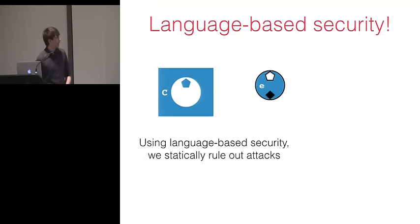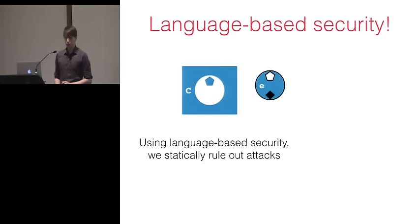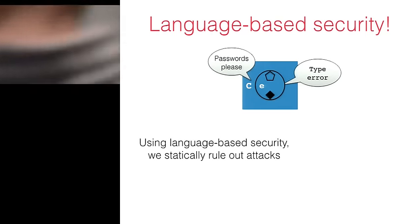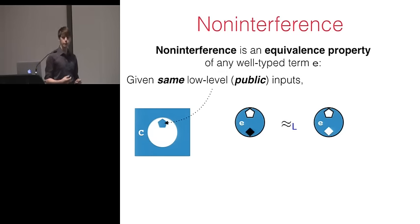Well, this is an easy problem, right? As language experts, we know we should just use language-based security. So we pick our favorite language for reasoning about security and we write E. The language guarantees that hostile contexts don't even type check. All the bad contexts are statically ruled out. And we get this because the language provides a non-interference guarantee.